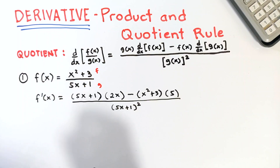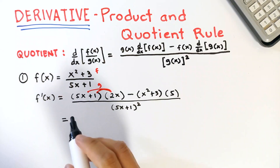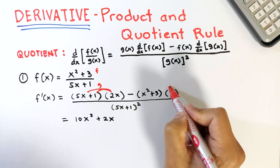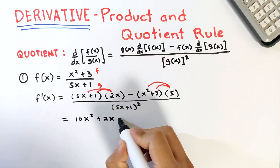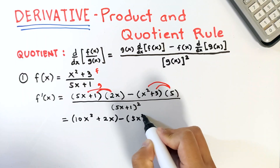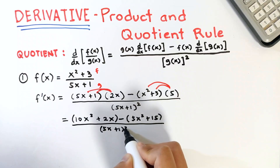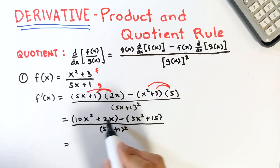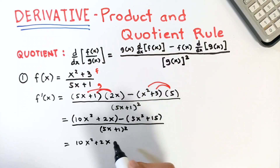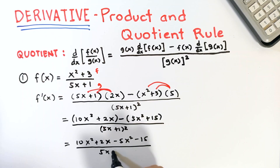Now let's simplify this. We need to distribute 2x in this binomial, so that's 10x squared plus 2x. Then for this one, we have times 5 and then times 5. So we have minus — grouping these — 5x squared plus 15, divided by 5x plus 1 squared. Next, subtract the polynomials in the numerator: that's 10x squared plus 2x, then change the operations, so we have minus 5x squared minus 15, all over 5x plus 1 squared.